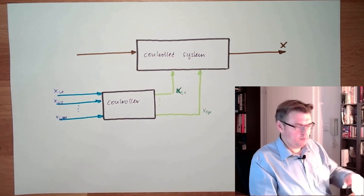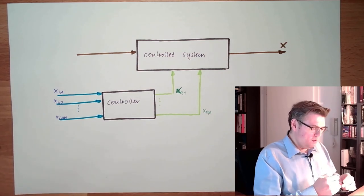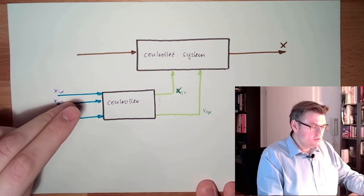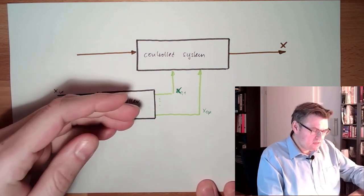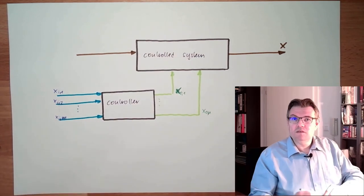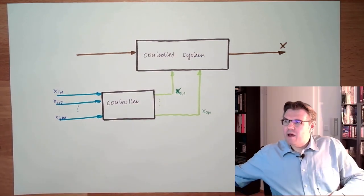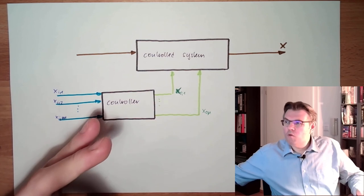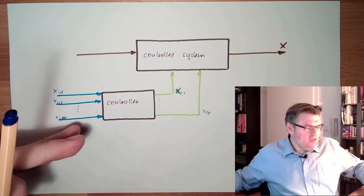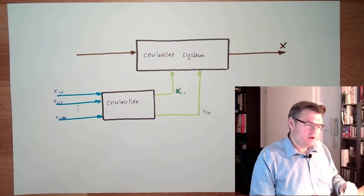That do not need to be the same amount. Based on those inputs, the controller decides what to do next to the control system. So basically, I am telling the controller what I want to have, and the controller is then influencing my control system accordingly.